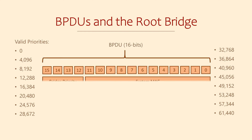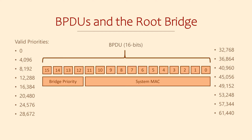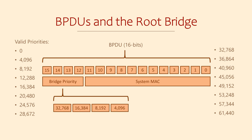Within the BPDU is a 16-bit Bridge Priority field. The actual priority starts at the 13th bit, and the lower bits make up the extended system ID, which we'll talk about another time. The point is we can't just use every value from this 16-bit range for the Bridge Priority. The important part to remember is that a valid priority needs to be divisible by 4096.